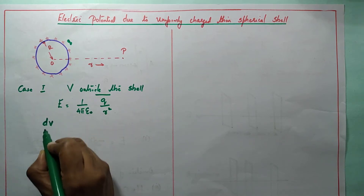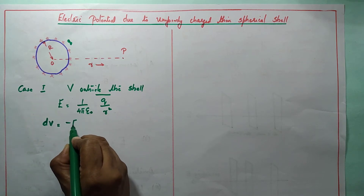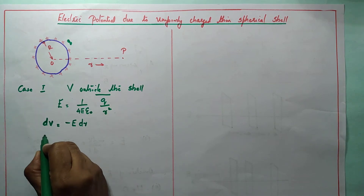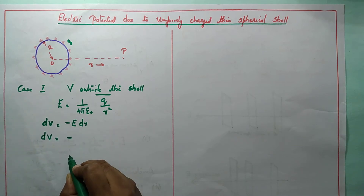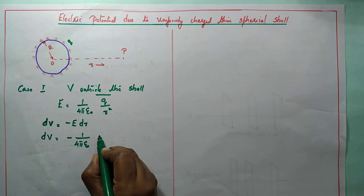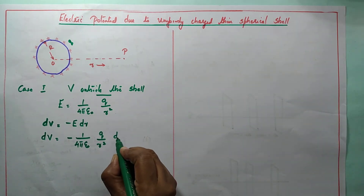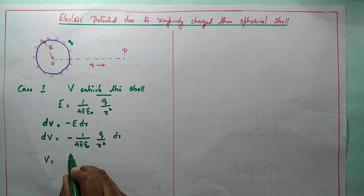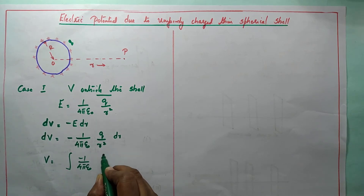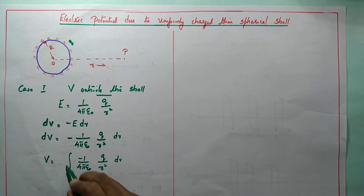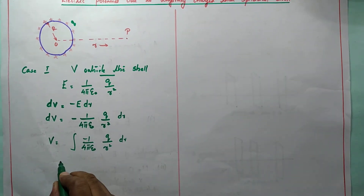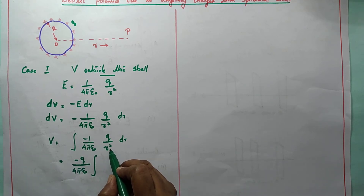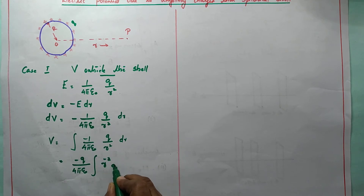The potential difference and electric field are related by dV equals minus E dot dr, where E represents the electric field and dV represents the potential difference. So dV can be written as minus E dr, where the electric field is 1 by 4π ε₀ times Q divided by r squared, into dr. We find the total potential by integration: V equals integral of minus 1 by 4π ε₀ times Q divided by r squared into dr. Taking the constants outside, we get minus Q divided by 4π ε₀ times integral of r raised to minus 2 dr.